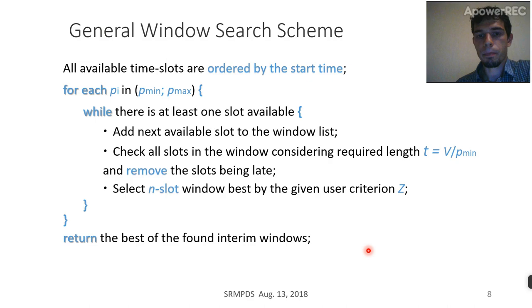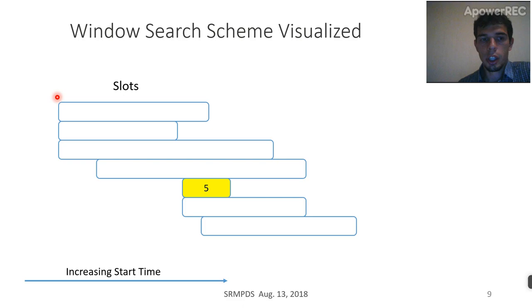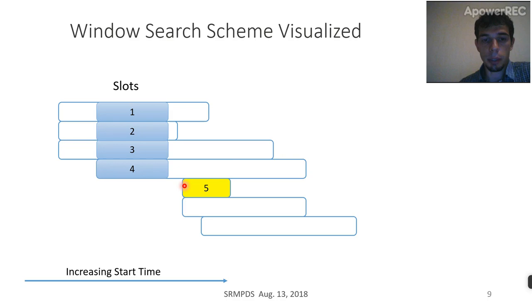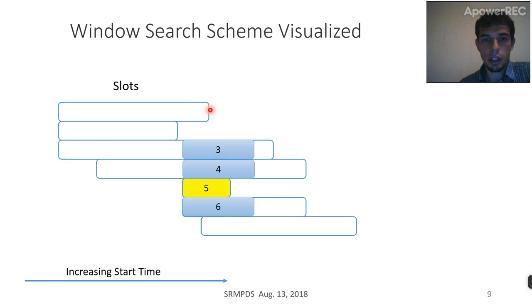On this slide, the window search scheme is visualized. We can see the system slots ordered by their start time, with start time increasing along the axis. On the first step, the window list consists of three slots. Then the next slot is added and the window list consists of four simultaneously available slots. At the next start time, two slots have early finish times and can't support our job execution, so they are dropped out.